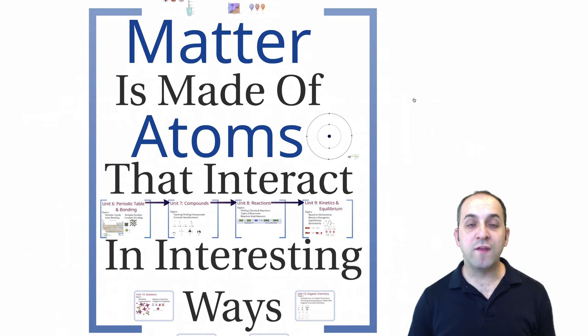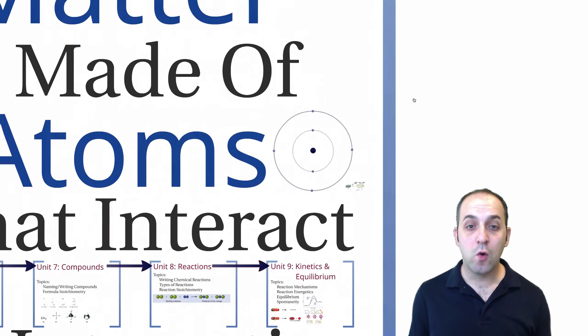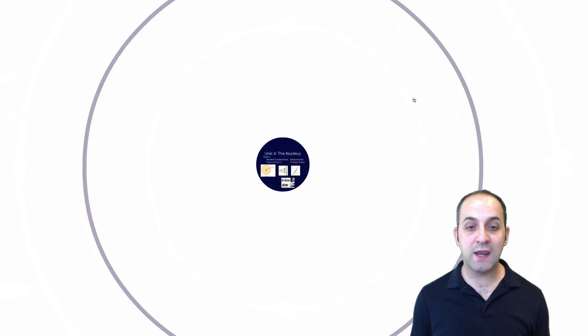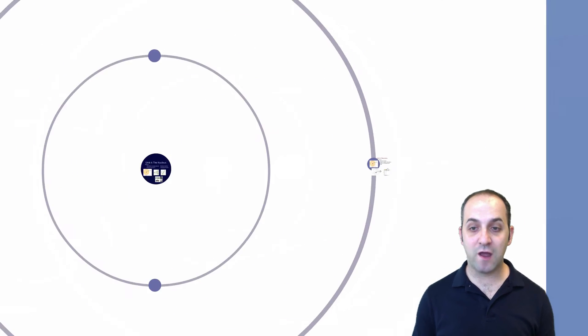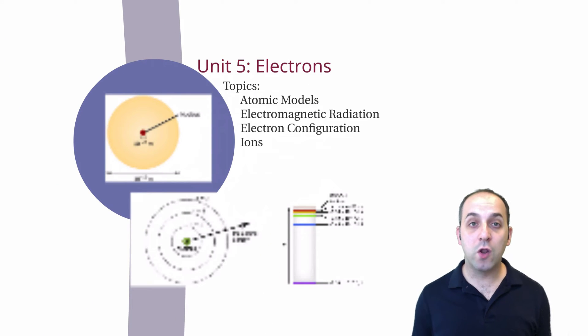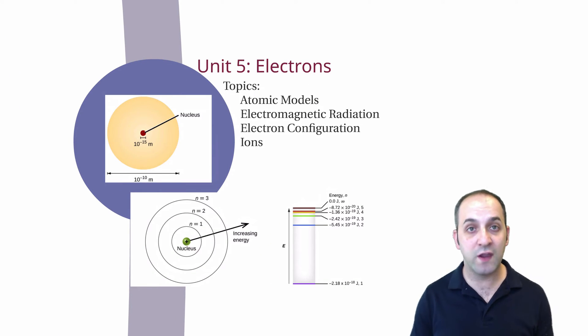Our overall theme for the year is that matter is made of atoms that interact in interesting ways. In our last unit we started our view of the atom by looking at the nucleus and nuclear chemistry. Now we're going to come out and focus on the electron. We'll look at some brief history of atomic models, which is really a history of how we've thought about electrons, and then we'll talk about electromagnetic radiation and how we represent electrons in our atomic models.